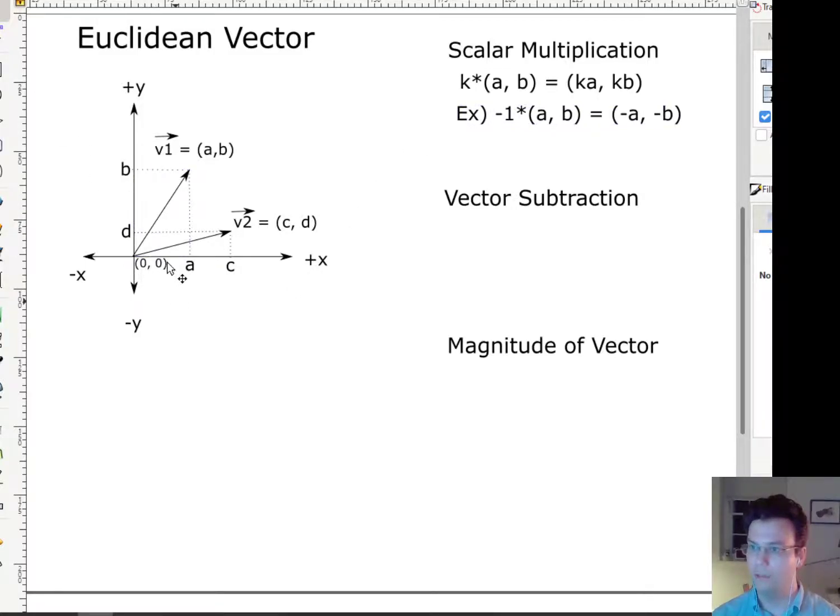And what that is, is a reflection of this vector about the origin. So what it looks like is just an arrow pointing in the opposite direction. Try and get this arrow set up here.